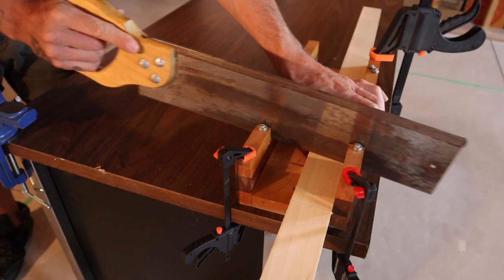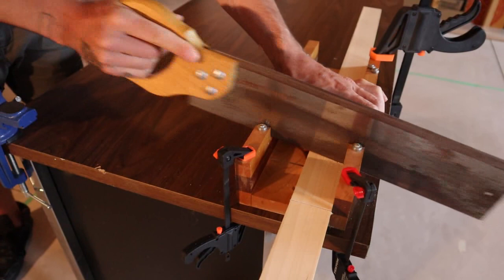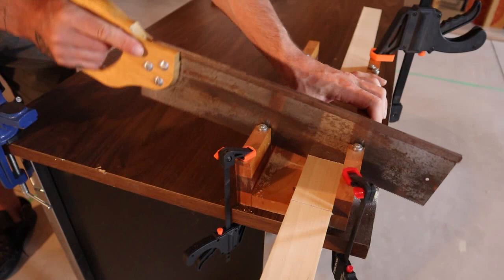Then you're going to want to cut on the forward stroke as you cut with the miter box.